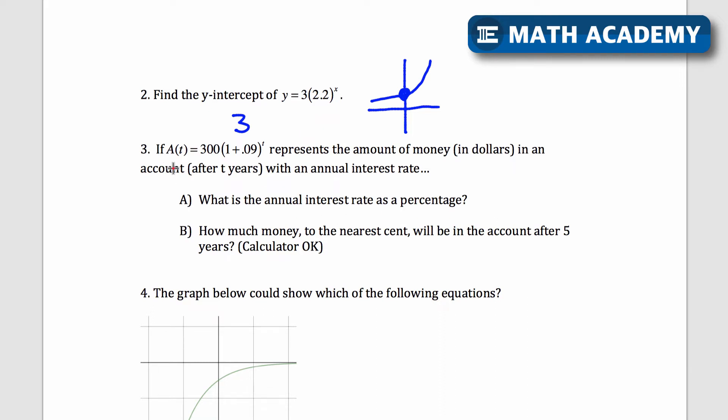Number 3, if A(t) equals 300 times (1 + 0.09) to the power of t represents the amount of money in dollars in an account after t years with an annual interest rate. A, what is the annual interest rate as a percentage?